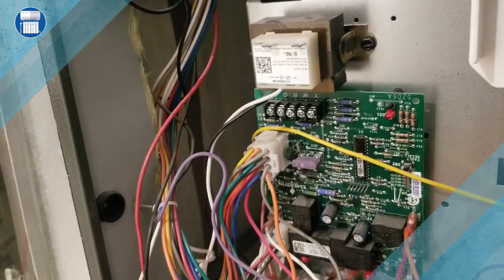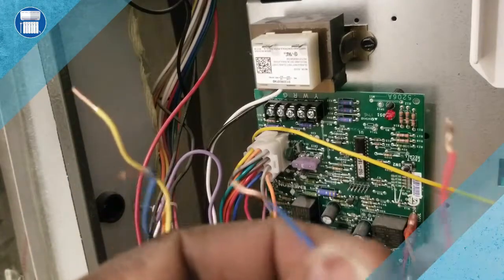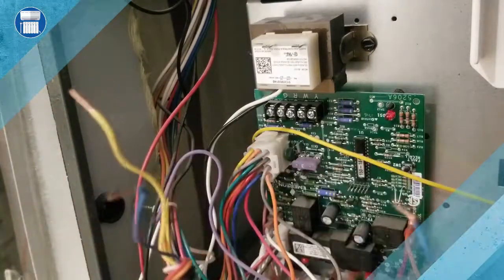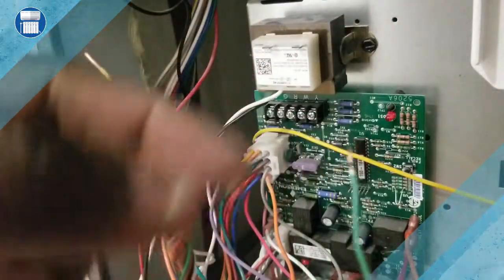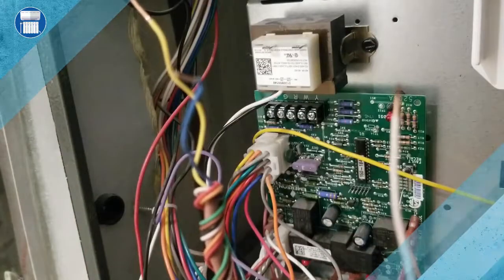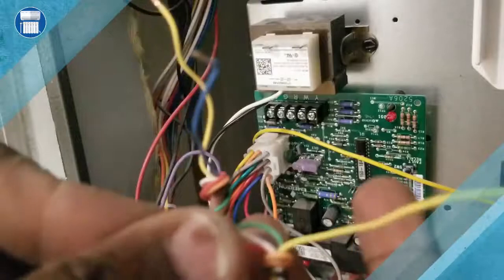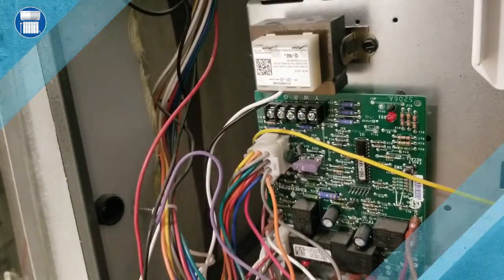So we're going to go ahead and wire up the unit. These are the colors of the wire right here. This is going to be your common, this is your red and it's also labeled on the unit. This is your green for your fan, this is your white for your heat, and this is your yellow for your cooling. So let's go ahead and connect them.